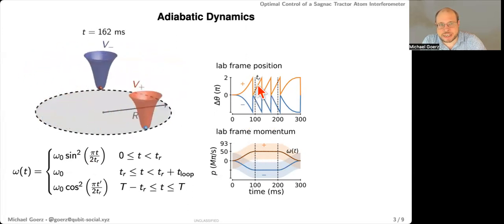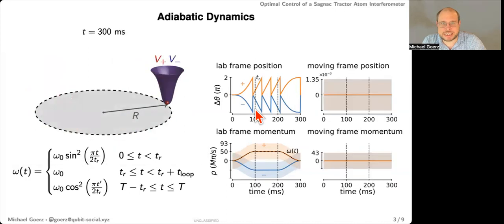And then once we're accelerated, we'll just keep rotating with the constant speed omega zero for some number of cycles. And then at the end, we'll just do the acceleration backward to bring the potentials to rest again. And you can see that they're perfectly aligned at the end. And again, this is happening adiabatically. So we have the wave packet always staying in the ground state.